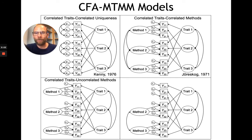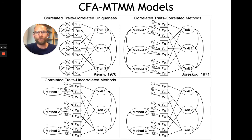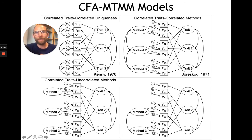One model proposed as a simplification of the correlated traits correlated methods model has uncorrelated method factors, shown in the lower left-hand corner. It has the same basic structure, but the method factors are not allowed to correlate — they are orthogonal. Under certain conditions this model is useful; however, it assumes that method effects do not generalize across different methods. For example, there could not be a relation between parent reports and teacher reports, which can be problematic when you have structurally different raters where some methods might be more strongly related to one another.